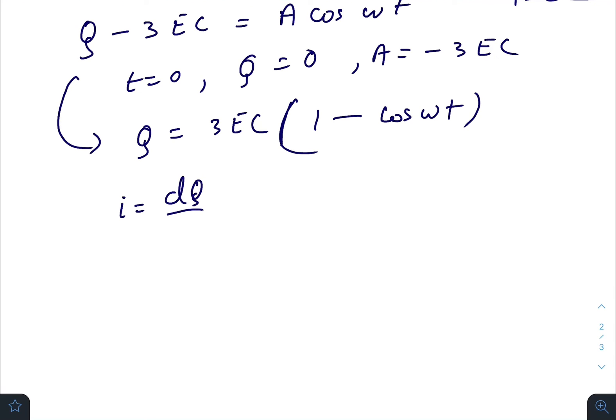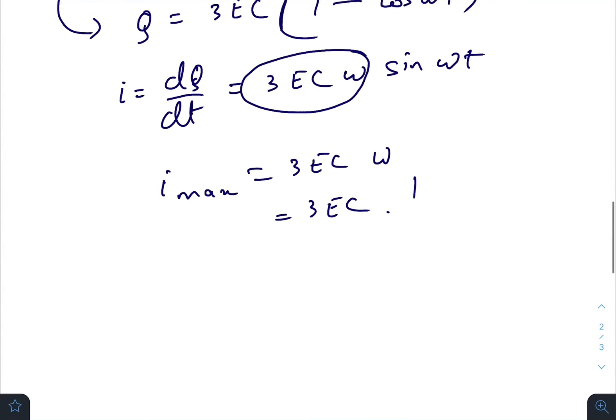So i, that is the current flowing through the inductor at any time t, is i = dQ/dt = 3εCω sin(ωt). The maximum current will be 3εCω. Since ω = 1/√(2LC), the final answer will be 3εC/√(2LC) = 3ε√(C/2L).